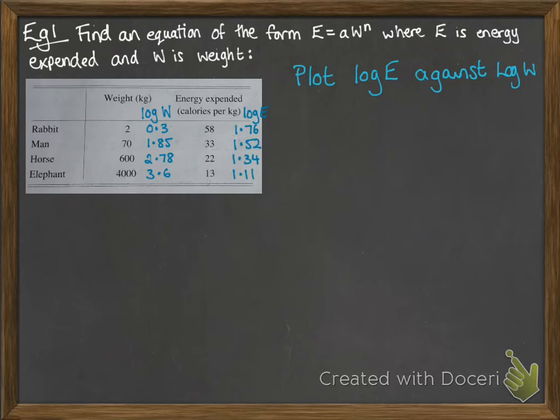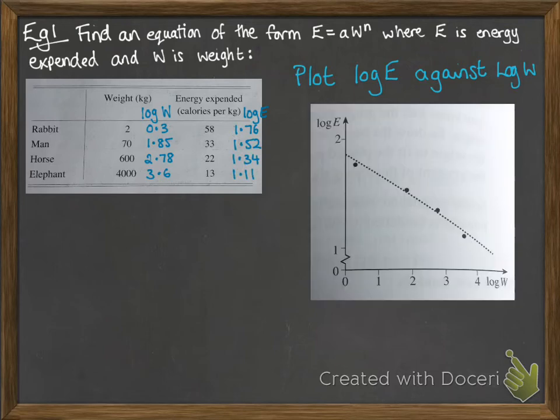Working out log of each of those values on that table and then plotting them, we get this graph. Now we can see that it makes roughly a straight line, and from there we can read off the values that we need. So we get the y-intercept is 1.8 and the gradient is negative 0.2, just reading off the graph like you would for any straight line.